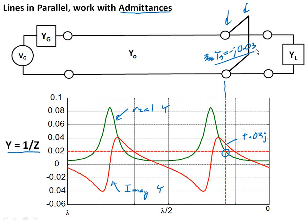And when we do that, that stub is going to exactly cancel out the imaginary part of the admittance at a point where we have the correct admittance to match the line. And by doing that, we essentially can get rid of any reflections from a mismatched load.